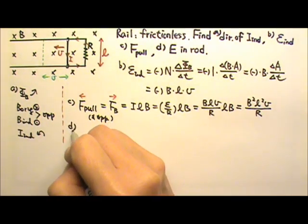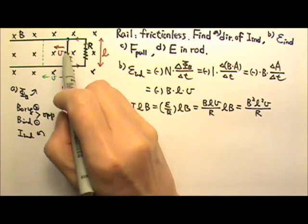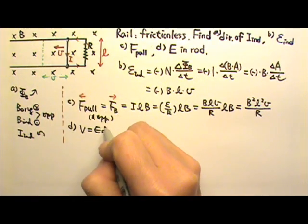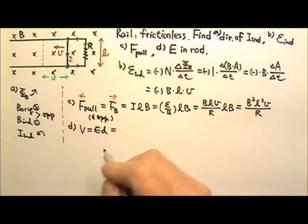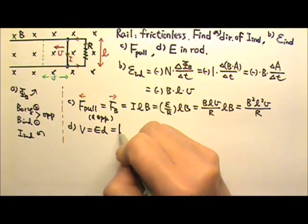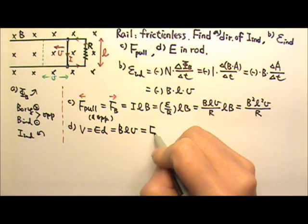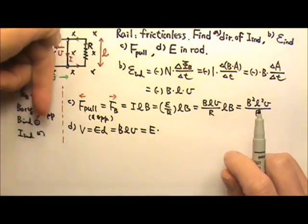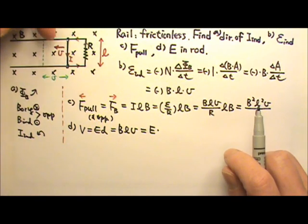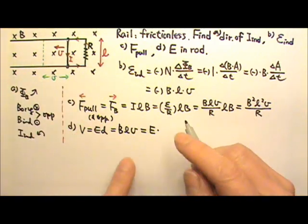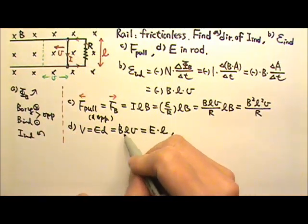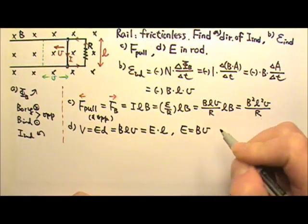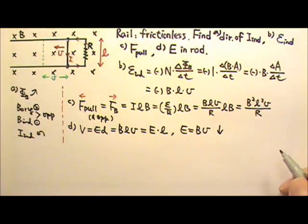Now let's find the electric field in the rod. If this rod is uniform, the electric field in the rod would be uniform. That means that we can use V equals to ED. This is for uniform electric field. The voltage is this EMF BLV. The electric field is what we're looking for. Now the current, the positive charges gets pushed down this way. So the electric field must go down this way. And the distance would be the L. So D is the L. Therefore I can cancel the L's. The electric field would be B times V. And this is a downward direction electric field.